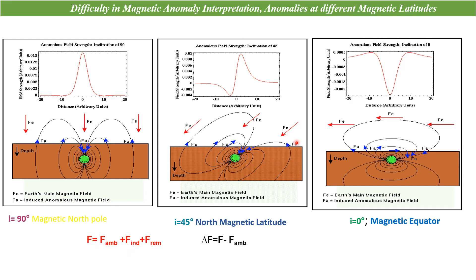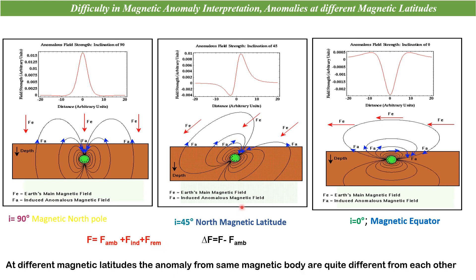The total magnetic field is the ambient magnetic field — the main magnetic field plus the induced magnetic field plus the remanent field. The magnetic anomaly is the total field minus the ambient field. If there is no remanent magnetization, anomalies from the same magnetic bodies are different at different latitudes, posing a significant problem in interpretation.